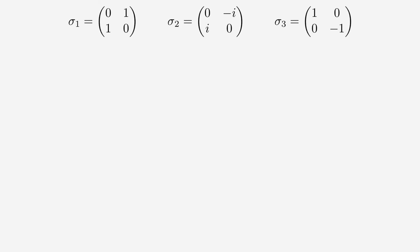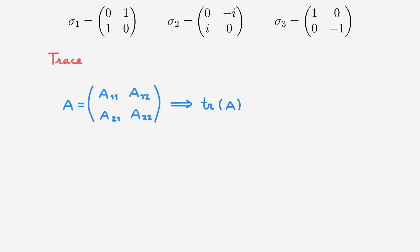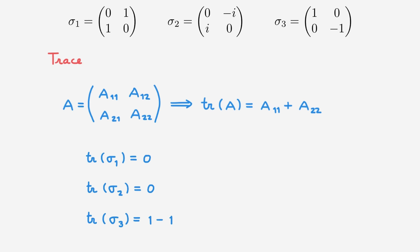The next property we're going to study is the trace of the Pauli matrices. For a general 2x2 matrix A, the trace is simply the sum of the diagonal elements. The trace of sigma 1 is 0, the trace of sigma 2 is also 0, and the trace of sigma 3 is 1 minus 1, which is also 0. So all the Pauli matrices are traceless.